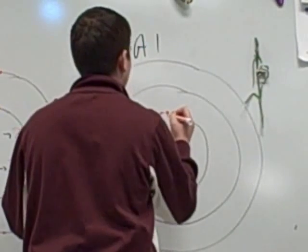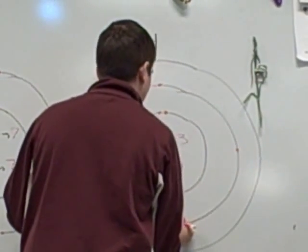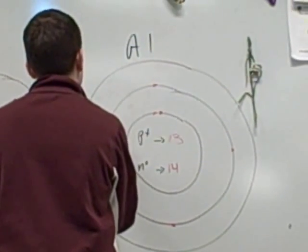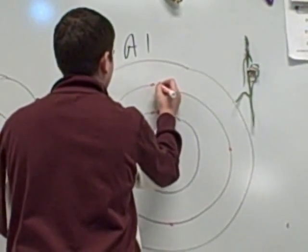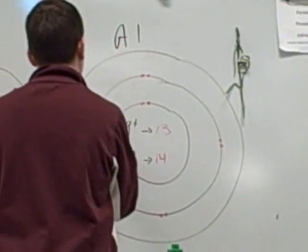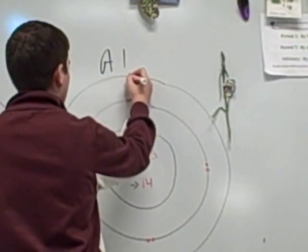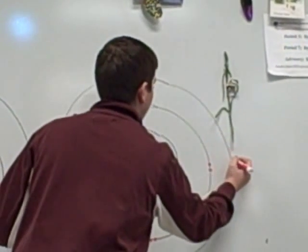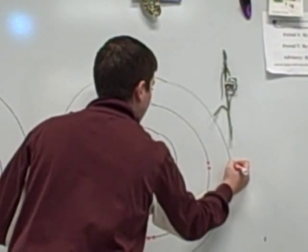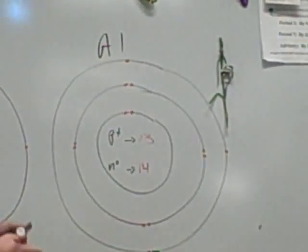One, two, you go to the next layer. Now it can only hold eight. You go around again. And then you have to go to the next layer. Twelve, thirteen. That's 13 electrons.